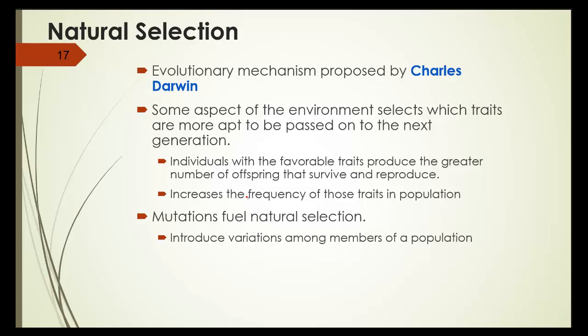Natural selection is the evolutionary mechanism proposed by Charles Darwin. Some aspect of the environment selects which traits that are more apt to be passed on to the next generation.